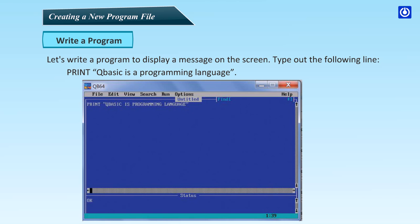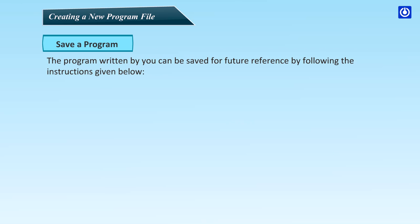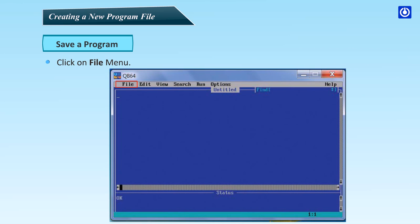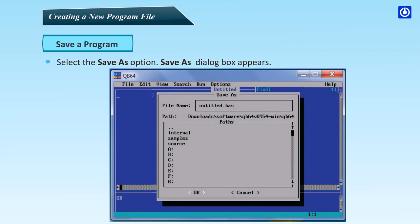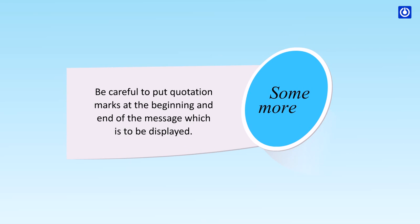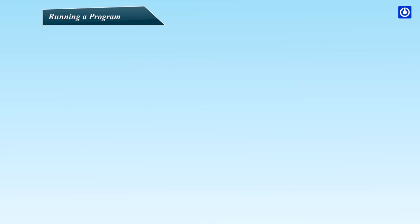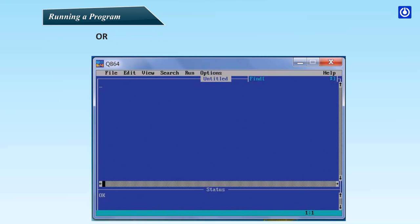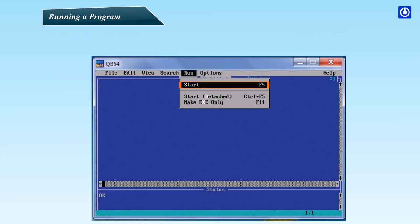Type: PRINT "QBasic is a programming language". Save a program: the program written by you can be saved for future reference. Click on File menu, select the Save As option. A Save As dialog box appears. Type the file name and click OK. In QBasic, the file will be saved with a .bas extension. Be careful to put quotation marks at the beginning and end of the message which is to be displayed. To run a program, press F5 or click on the Run menu, then Start. A black screen appears displaying the output.